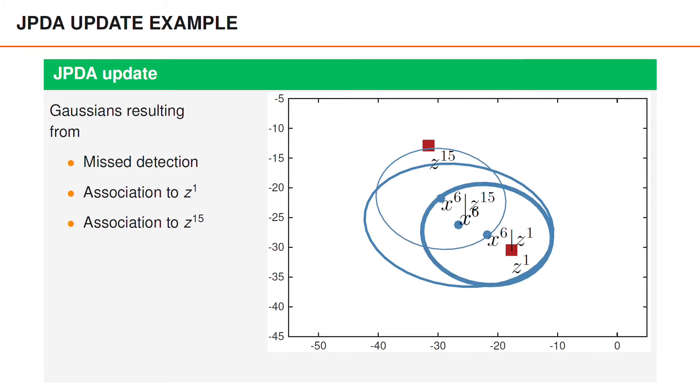Here we show the Gaussians that would result from misdetection, association to measurement 1, and association to measurement 15. And the width of the line that shows the covariance matrix is proportional to the marginal association probability. So we have the largest width for the association to measurement 1, since that probability was highest, 0.77.